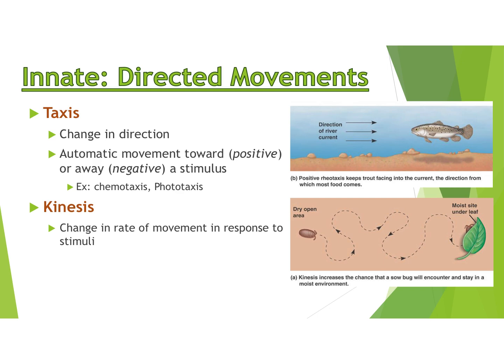Kinesis is a change in the rate of movement — speeding up or slowing down. For example, a bug running faster to get under a moist leaf. Any time an animal runs faster when it senses danger, that's kinesis movement.